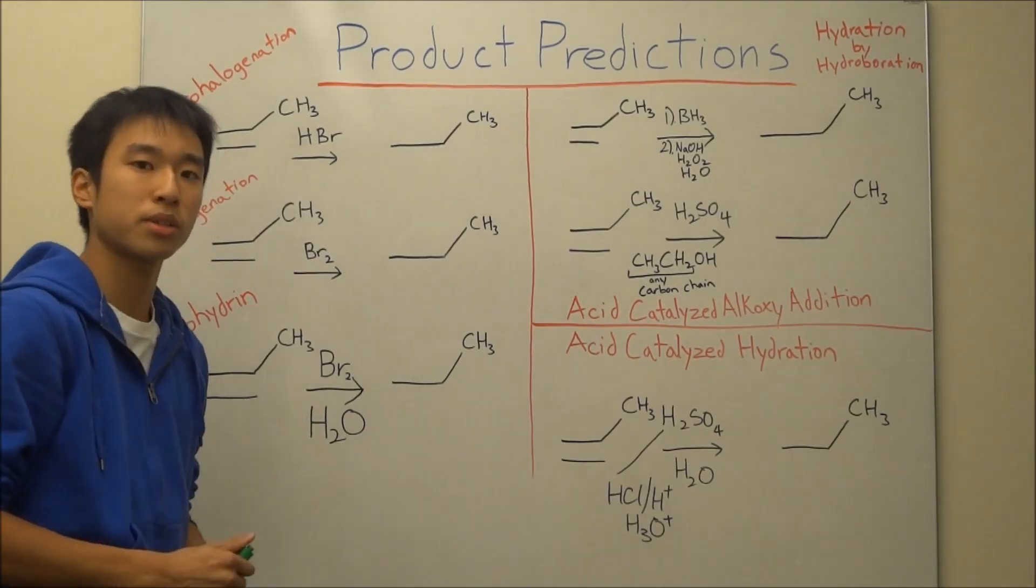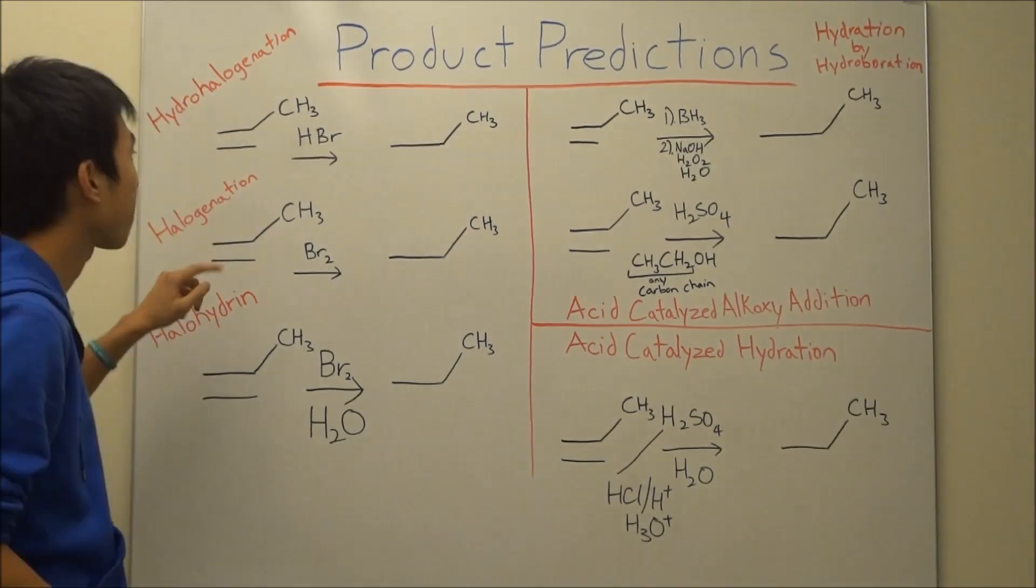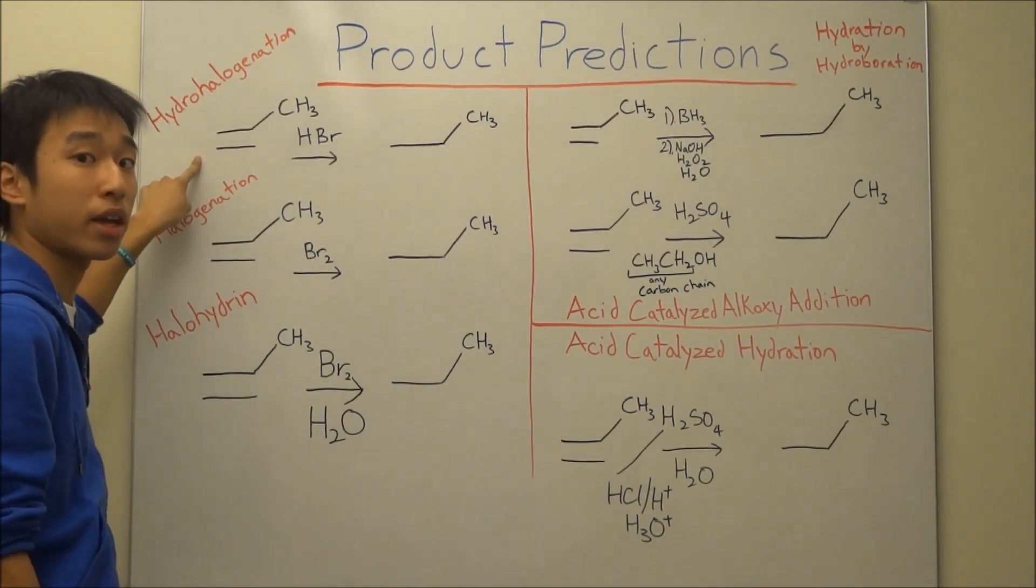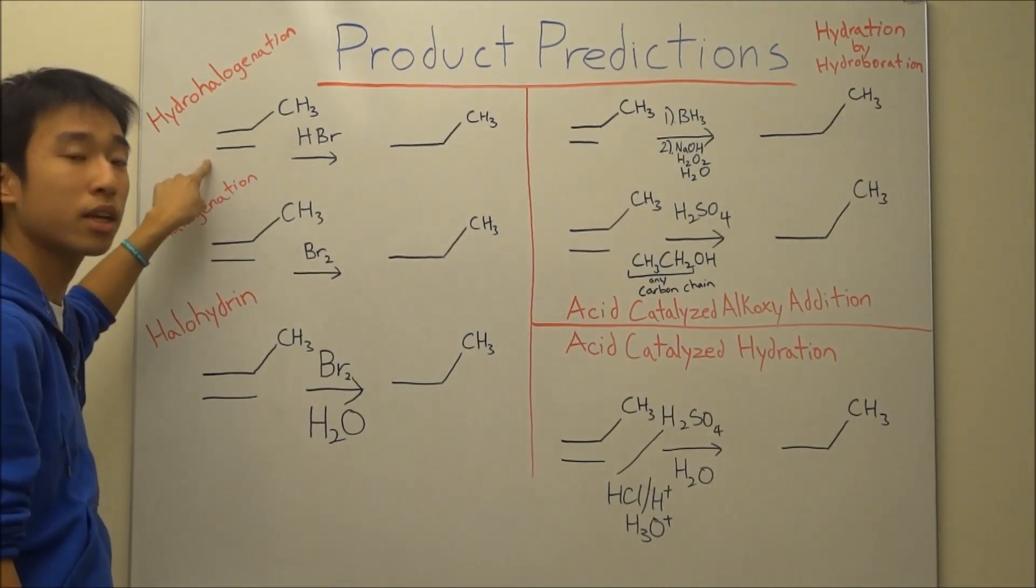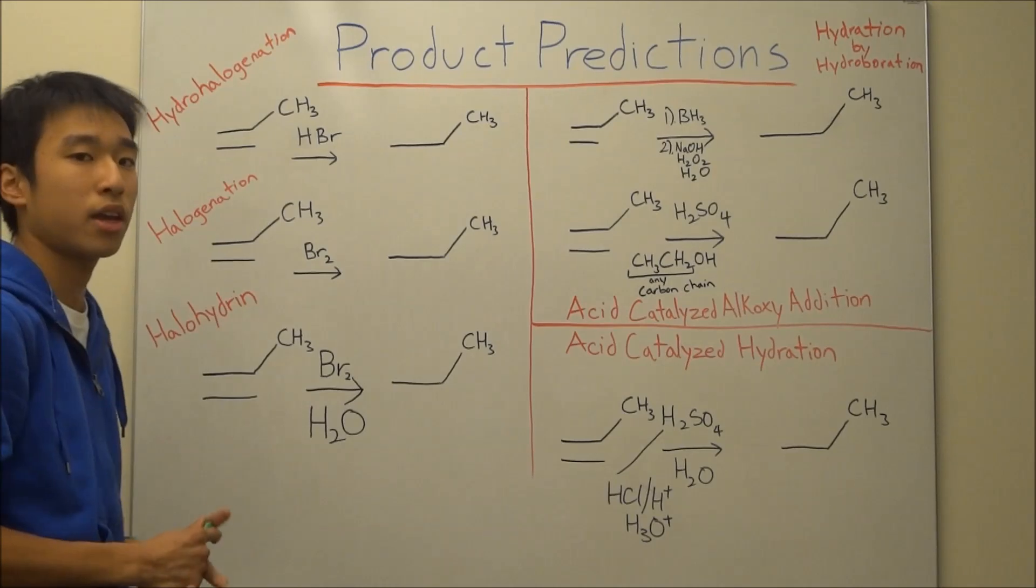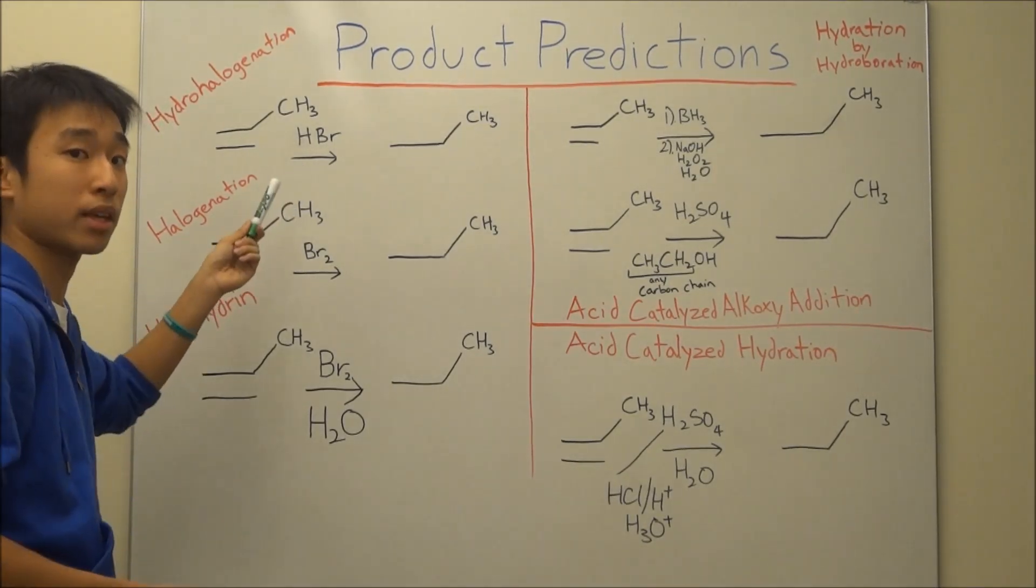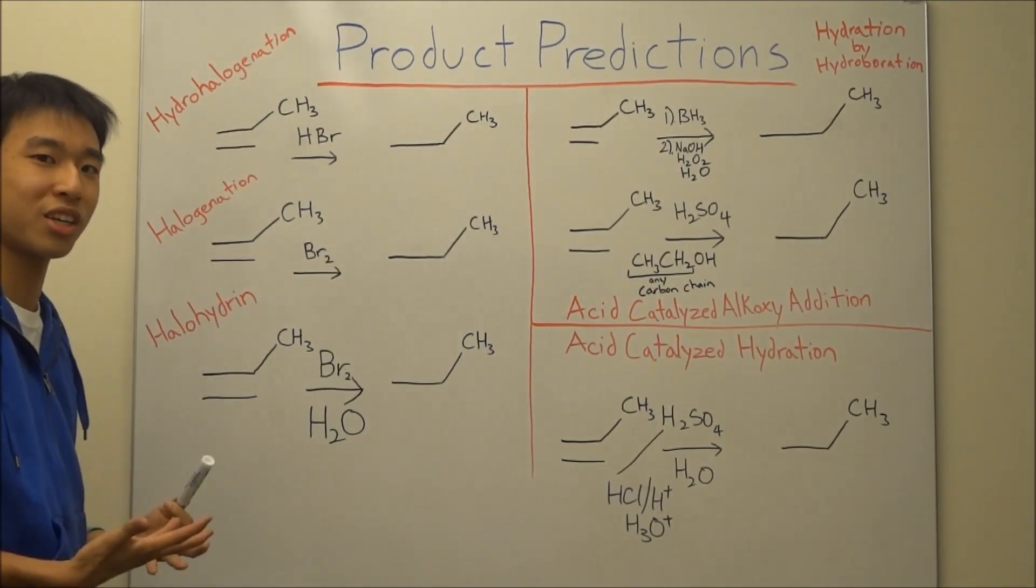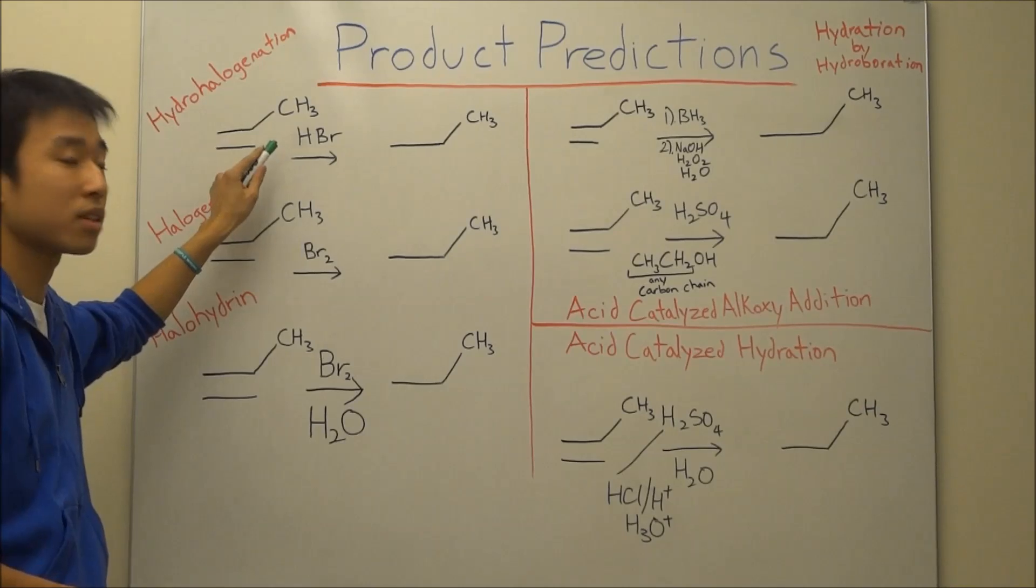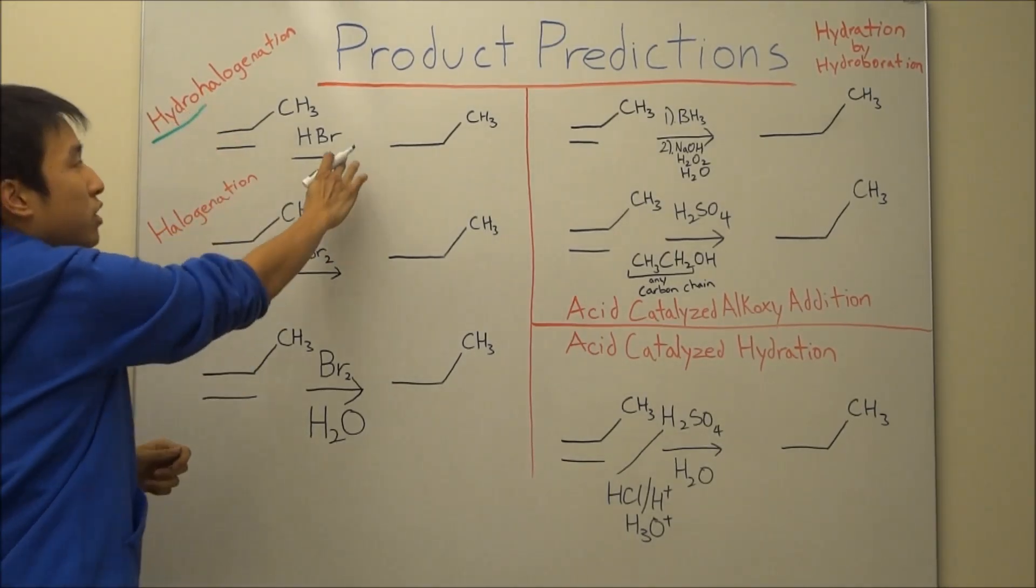Something else you should know is that you can actually figure out the product from just the name of the reaction. So you take a look at what you have. In this first reaction up here, all you have is basically an alkene and HBr, and you only learned one reaction where you have HBr by itself, and that's hydrohalogenation. The reason it's called hydrohalogenation is because your reactant is basically just a hydrogen, hence the hydro part, and a halogen, bromine.